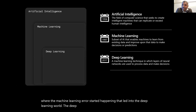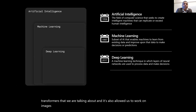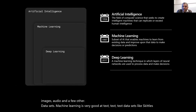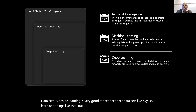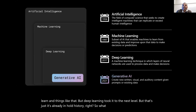Machine learning led into the deep learning world. Deep learning has made possible all these transformers that we're talking about, and it allowed us to work on images, audio, and other data sets. Machine learning is very good at text data sets, but deep learning took it to the next level. What is new now is this generative AI space.